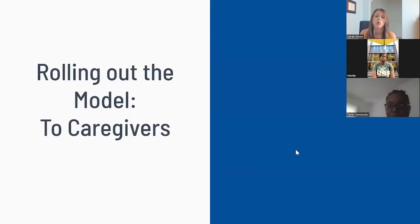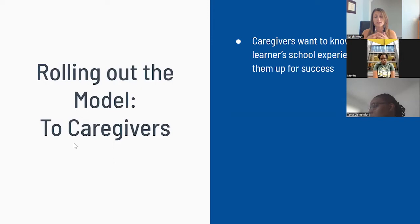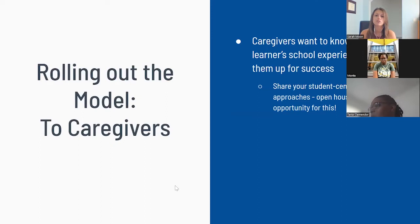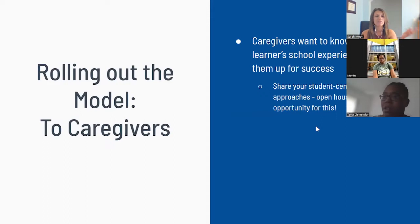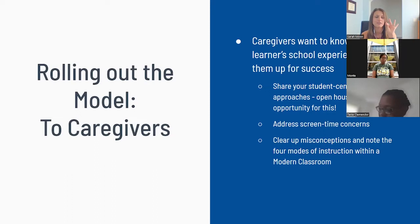Last, we want to think about rolling out the model to caregivers. Caregivers want to know how their learner's school experience will set them up for success. Sometimes we might get pushback, and that's okay, because pushback often stems from people wanting to understand. We can address concerns and share that student-centered approach, because at the very core, Modern Classrooms is about students and ensuring student access and success. Open house is a great opportunity to involve caregivers in the model. You can also address screen time concerns and clear up misconceptions — in a modern classroom, students aren't just on the laptop all day, because we have four modes of instruction: blended instruction, small group, one-on-one, and whole group.